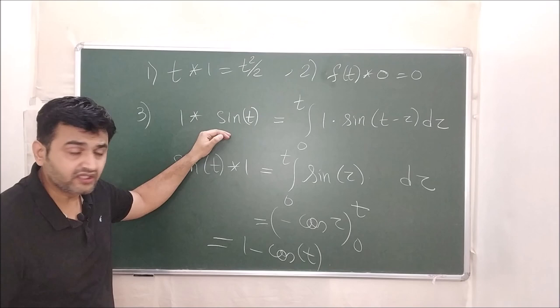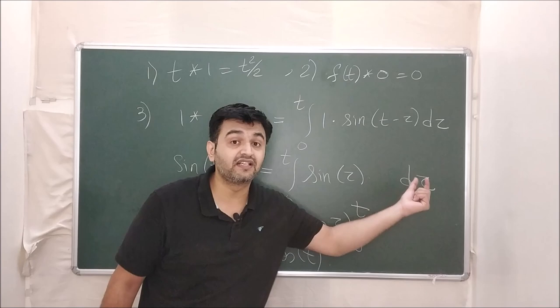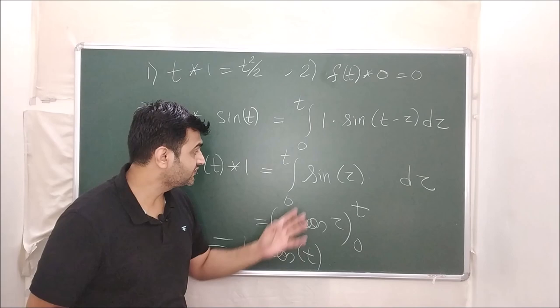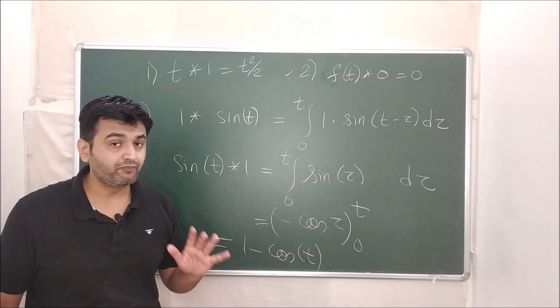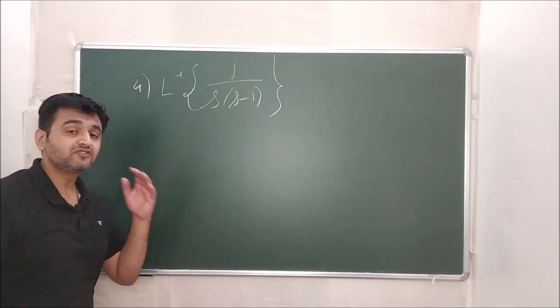This was straightforward, but many times you will have more complex functions. An important tip: always choose g to be the simplest function, because g undergoes the translation g(t−τ). So keep the complex function as f and the simpler one as g. That choice really reduces your work.